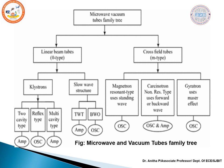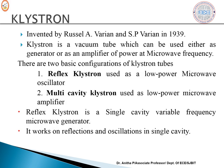The reflex klystron is included in the syllabus. It is a linear beam tube under the microwave tube family. The klystron was invented by Russell Varian and S.P. Varian in 1939. It is a vacuum tube which can be used either as an amplifier or as an oscillator of microwave frequency.